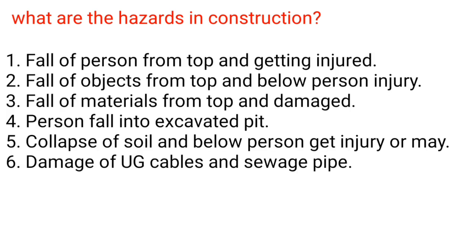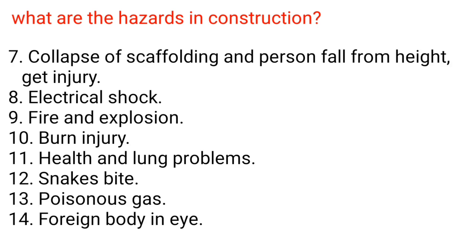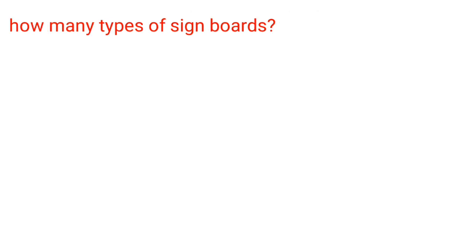What are the hazards in construction? 1. Fall of a person from top and getting injured. 2. Fall of objects from top injuring persons below. 3. Fall of materials causing damage. 4. Person falling into an excavated pit. 5. Collapse of soil injuring persons below. 6. Damage of underground cables and sewage pipes. 7. Collapse of scaffolding and person falling from height. 8. Electrical shock. 9. Fire and explosion. 10. Burn injury. 11. Health and lung problems. 12. Snake bites. 13. Poisonous gas. 14. Foreign body in the eye.